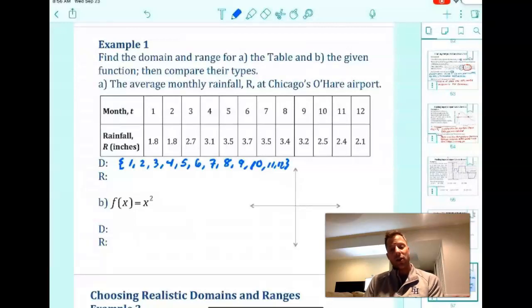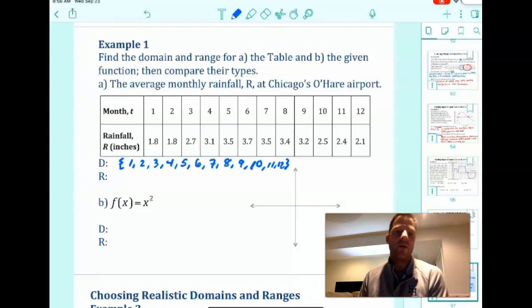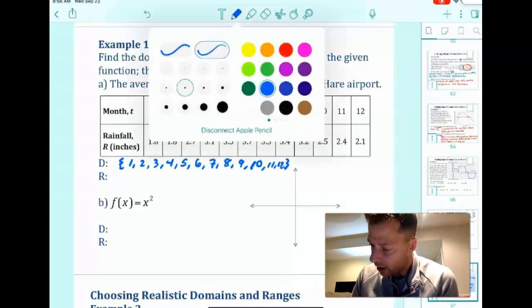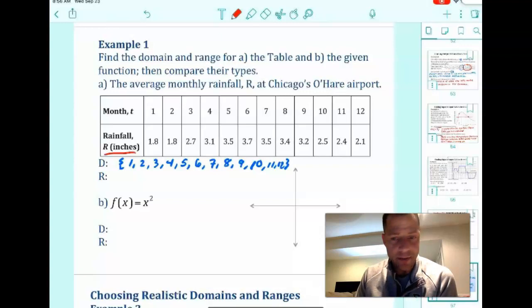So range, you're going to also write it, but be careful here. If it's the range or the domain, don't put anything that repeats. If there were two 6s or two 7s or two 3.4s, you only have to put it one time. If you notice the first two months, January and February, we get an average rainfall of 1.8 inches. Only write that one time. So our range value is our R value here because that's depending on the month.